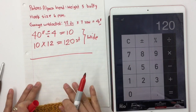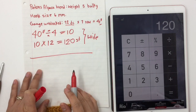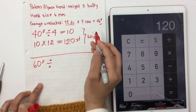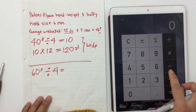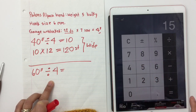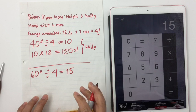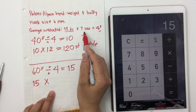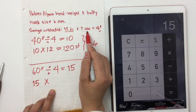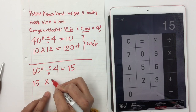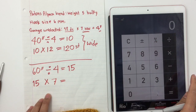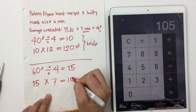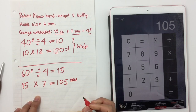Now for the length, I want 60 inches. I divide 60 by 4, which equals 15. But this time I'm going to multiply by the rows from my double crochet gauge, which is 7 rows. So 15 times 7 equals 105 rows. So for double crochet, I need to make 105 rows to have 60 inches long.